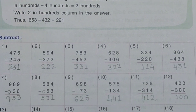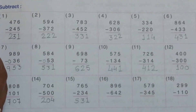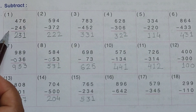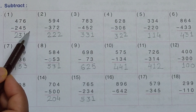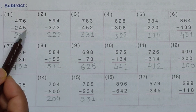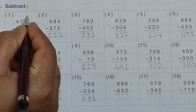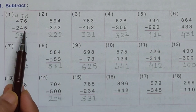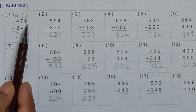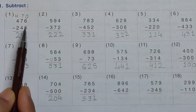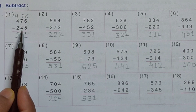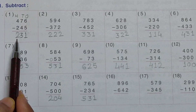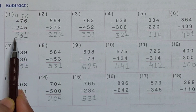Now see the first practice problem: subtract 476 minus 245. You have to write down which digit is on ones place, tens place and hundreds place. First, subtract ones place: six minus five equals one. Tens place: seven minus four equals three. Hundreds place: four minus two equals two. Your answer is two hundred and thirty-one.